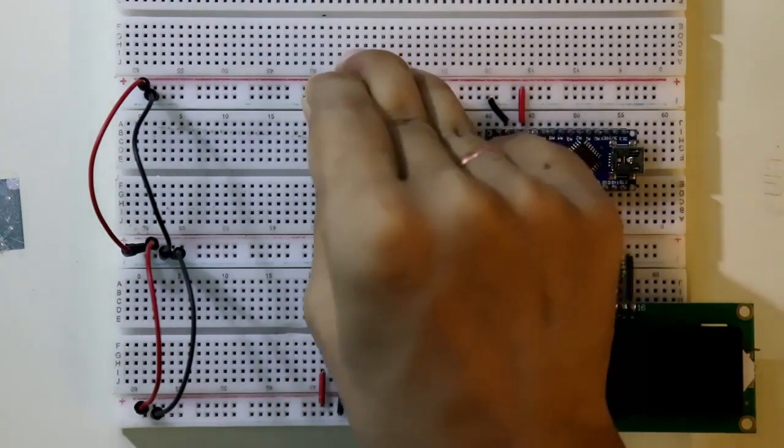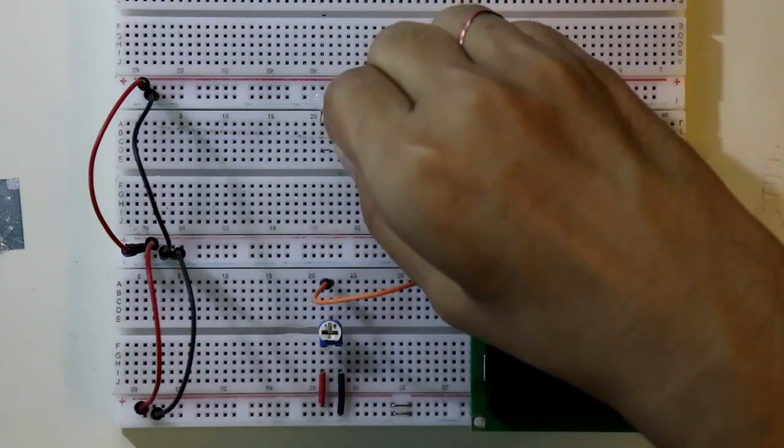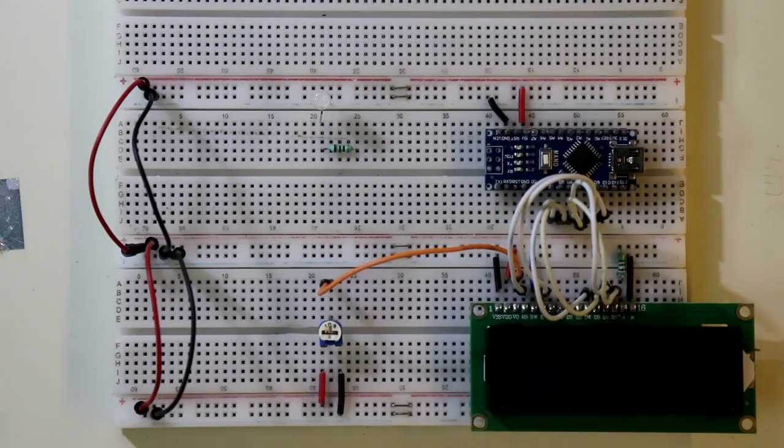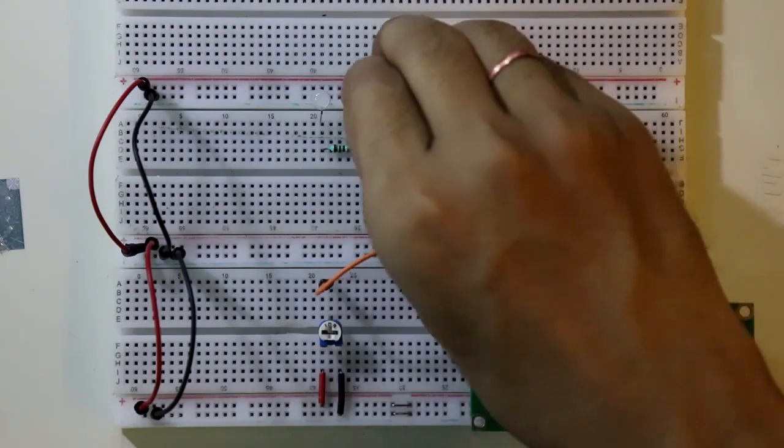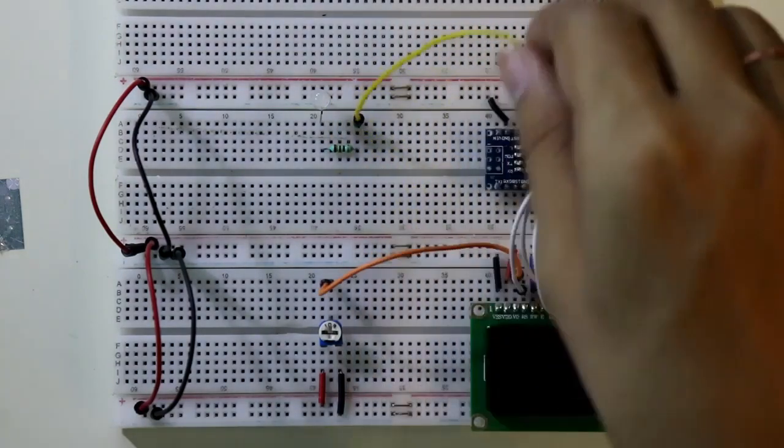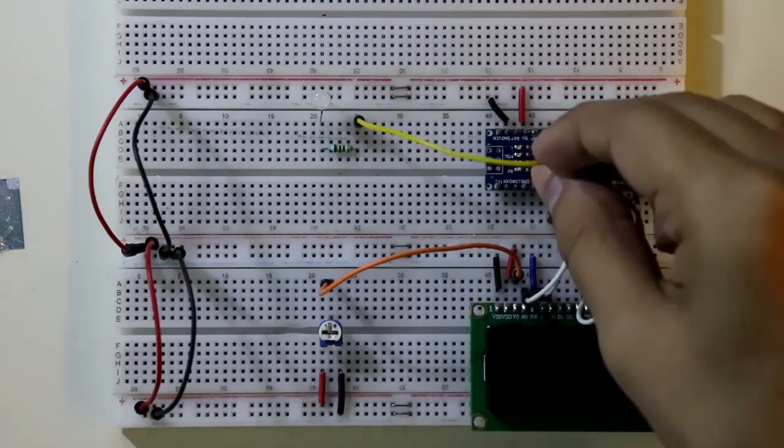Now connect the LED. A 220 ohms resistor is connected with it. This LED is connected to D10 of Arduino.